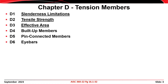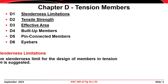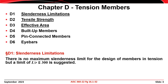Chapter D of the AISC specification addresses tension members. That chapter includes six sections and we'll discuss those sections that are underlined here. The first section, Section D1, includes a recommended serviceability limit on the slenderness of a member.